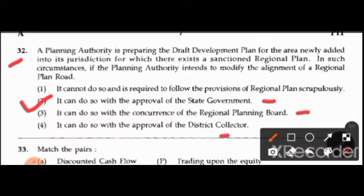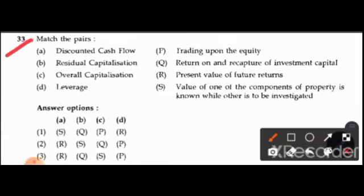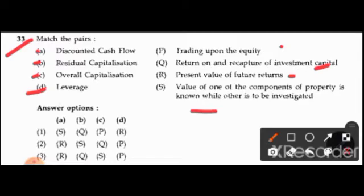Question 33: Match the pairs. First column: A is discounted cash flow, B is residual capitalization, C is overall capitalization, and D is leverage. Second column: P is trading upon the equity, Q is return on and recapture of the investment capital, R is present value of the future return, and S is value where one component of a property is known while the other is to be investigated.